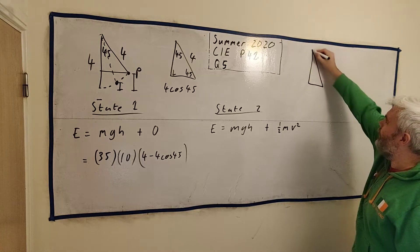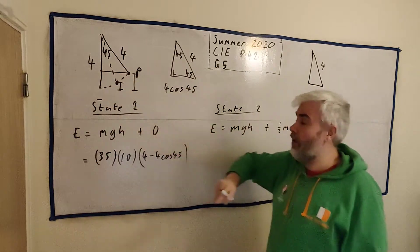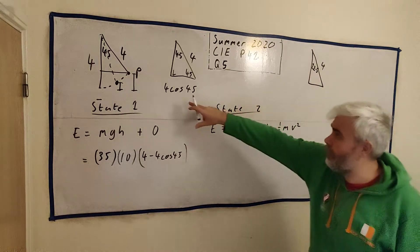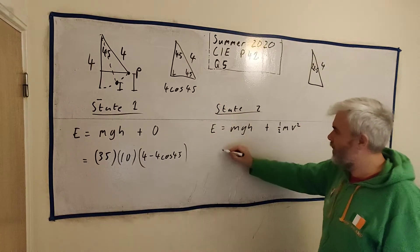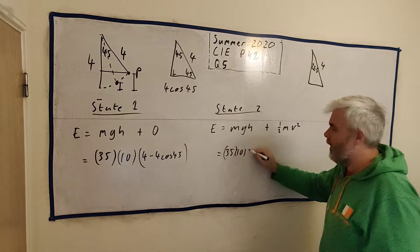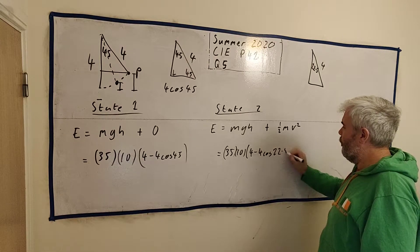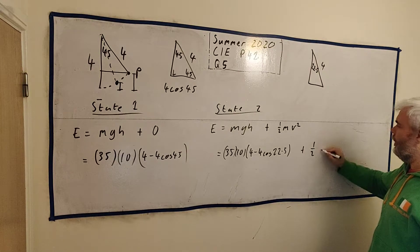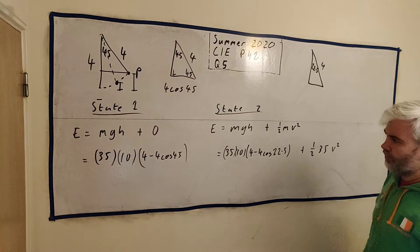Let's do the same for the second system. Remember, the second system is going to be slightly different. Instead of 45, it's halfway along. So it's 22.5. So the height will work out very similar. Before cosine 22.5. So the energy of this system is 35 times 10 multiplied by 4 minus 4 times cosine 22.5. That's the potential energy. Plus a half. M is 35 again. And V. We don't know. We're going to find out.